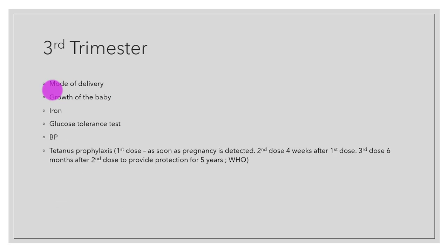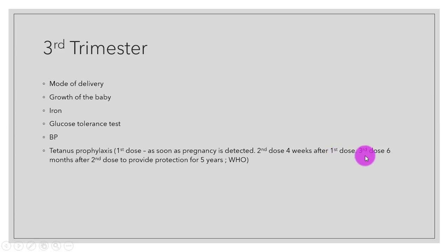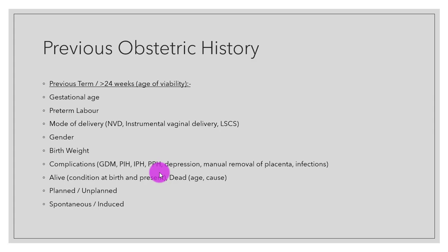In the third trimester, we ask whether she has discussed her mode of delivery with the doctors, NSS, growth of the baby, whether she is taking iron medication, whether she has had a glucose tolerance test and its result, blood pressure, and tetanus prophylaxis. According to WHO, tetanus is given in three shots: the first dose as soon as pregnancy is detected, the second dose four weeks after the first, and the third dose six months after the second, to provide full protection for five years.